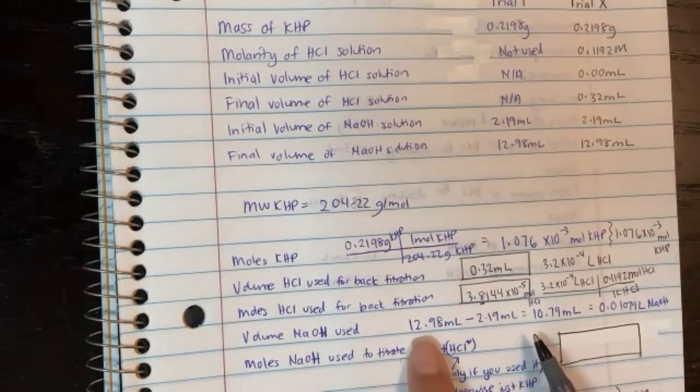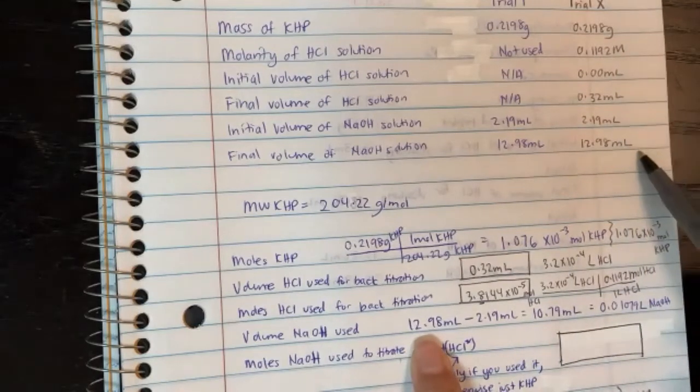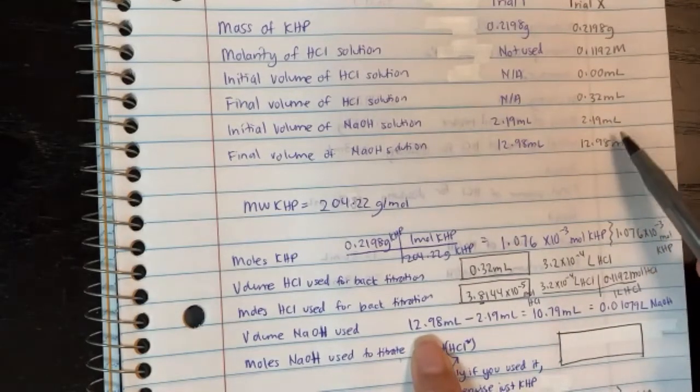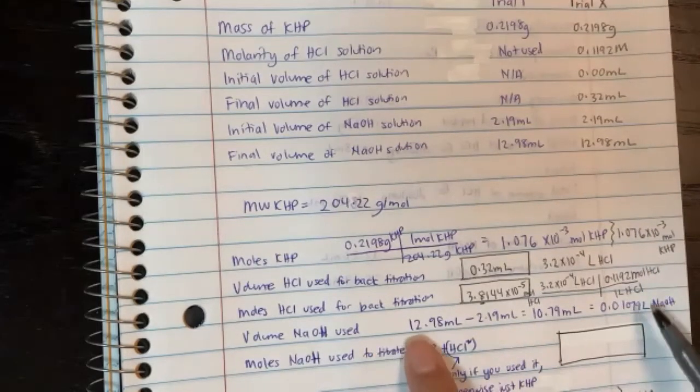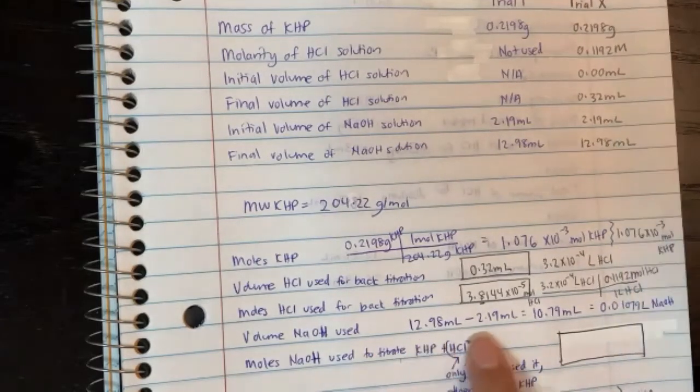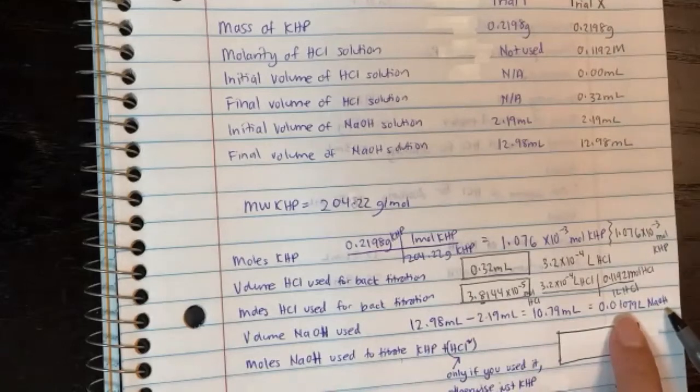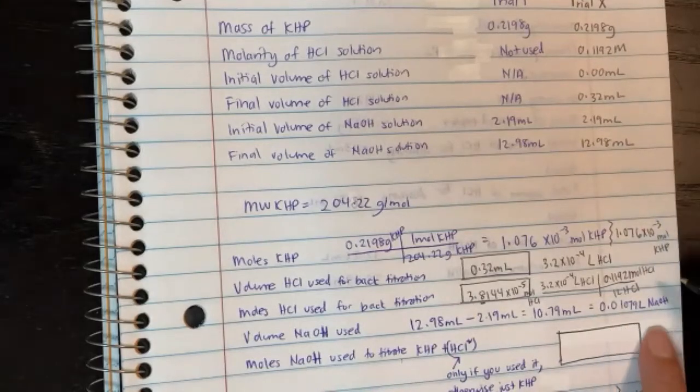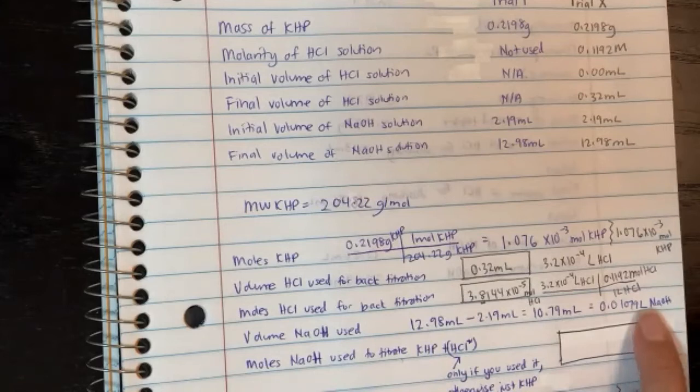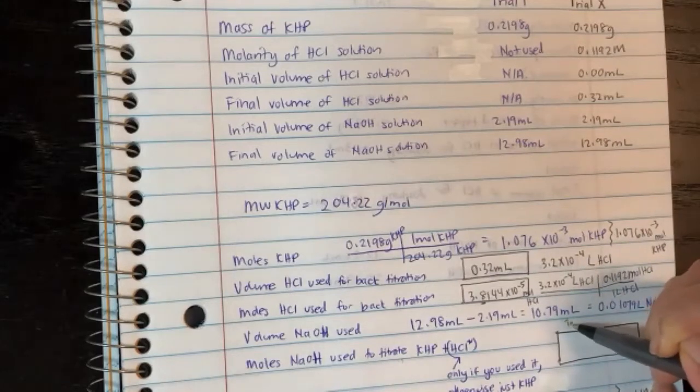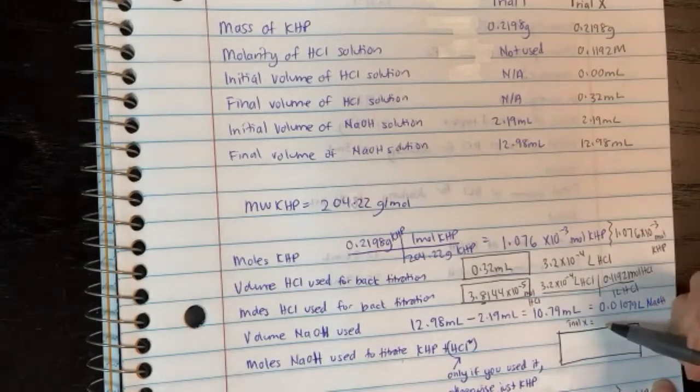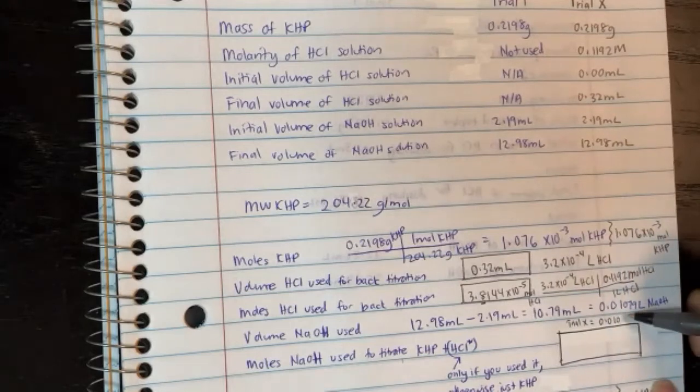Now in this case here, volume of NaOH, I did not change the numbers here. So it still stayed the same. So I'm just going to say, well, if you have to do volume of NaOH, you still take final minus initial. Again, we get the same answer for this guy. So I'm just going to rewrite this one is also the same for trial X, 0.01079 liters of NaOH.